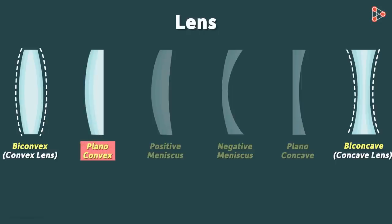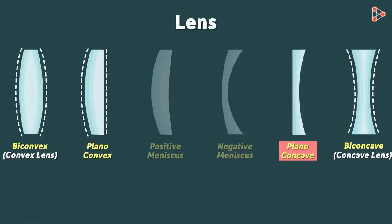A plano-convex lens has only one spherical surface curved inward and the other surface is plain. Similarly, in a plano-concave lens, the spherical surface is curved outward and the other surface is plain.